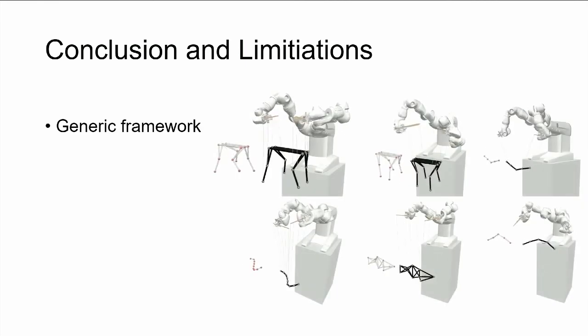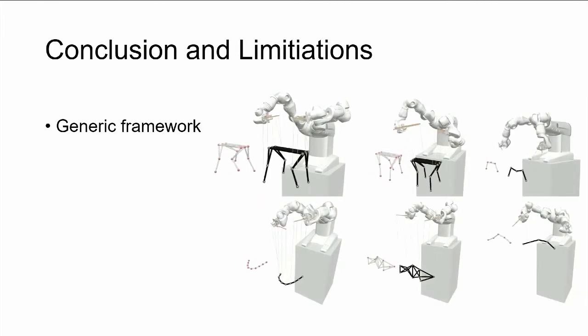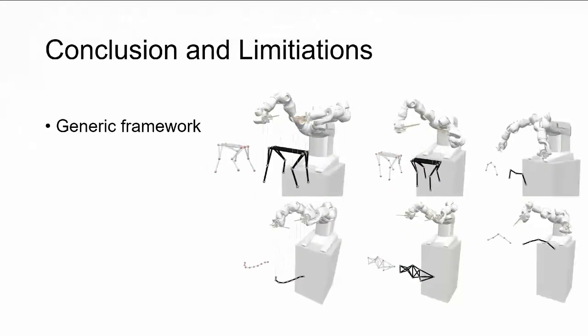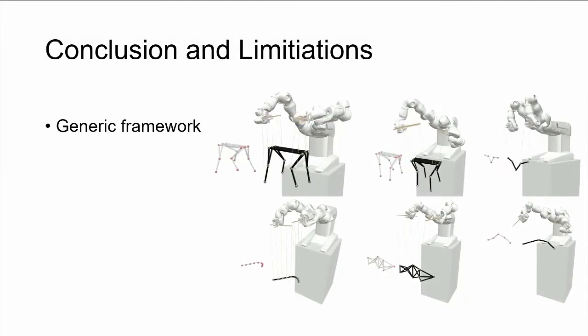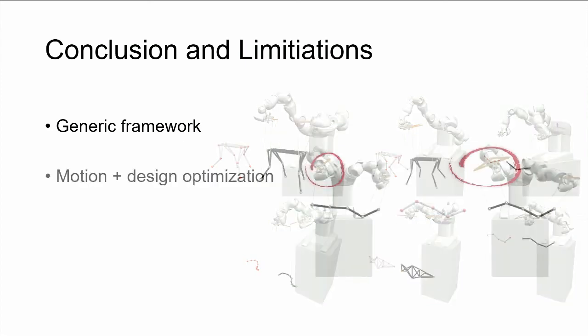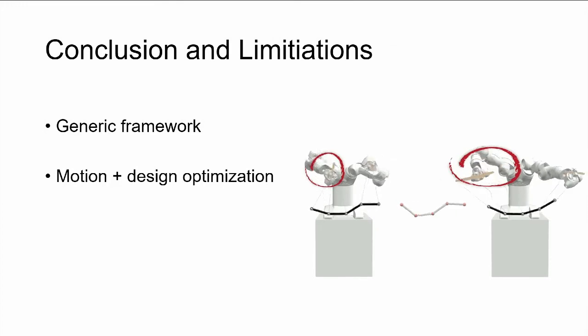Let me finish up with some conclusions. We present a computational framework for robotic animation of marionettes. We validated our methodology with different puppet designs and target motions. Our framework is generic in the sense that it is not limited to this puppeteering application, but can be used to control all kinds of physical systems, given that there is a differentiable model available. We showed that we can optimize for design parameters alongside the motion using techniques from sensitivity analysis.